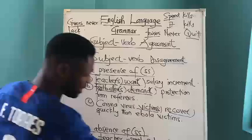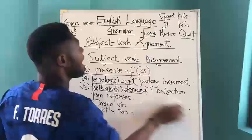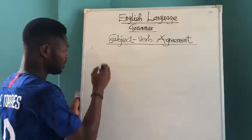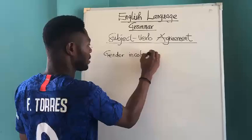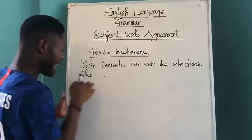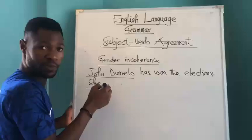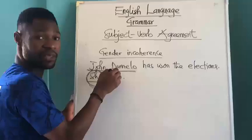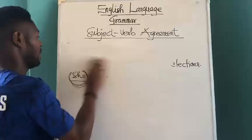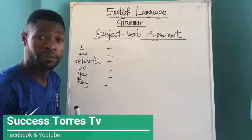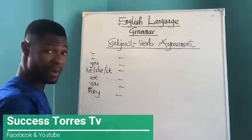Let us now look at the inflections with respect to the conjugations of the pronouns or nouns and the verbs, as far as subject-verb agreement is concerned. Before we look at the inflections, let us not forget that we also have what we call gender incoherence. For example, if I say John Domelo has won the elections and then, as I continue to replace John Domelo with a pronoun, I write 'she' — that is trouble. Gender incoherence is also part of concord, because John Domelo is male.